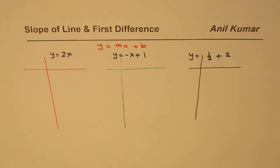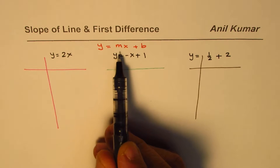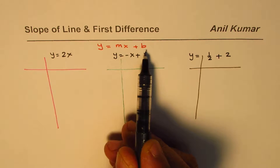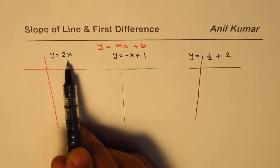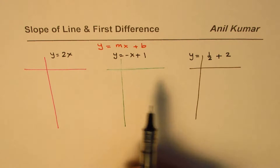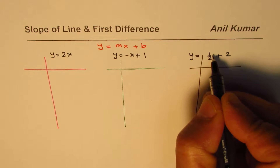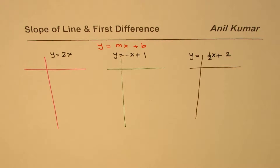I'm Anil Kumar and in this video we will see the relation between slope of the line and first difference. I've written three different equations of a line in slope-intercept form: y = 2x, then y = -x + 1, and y = ½x + 2.